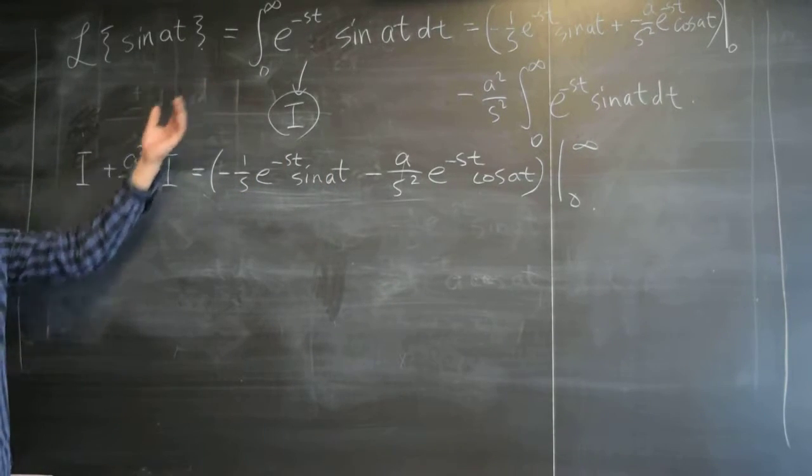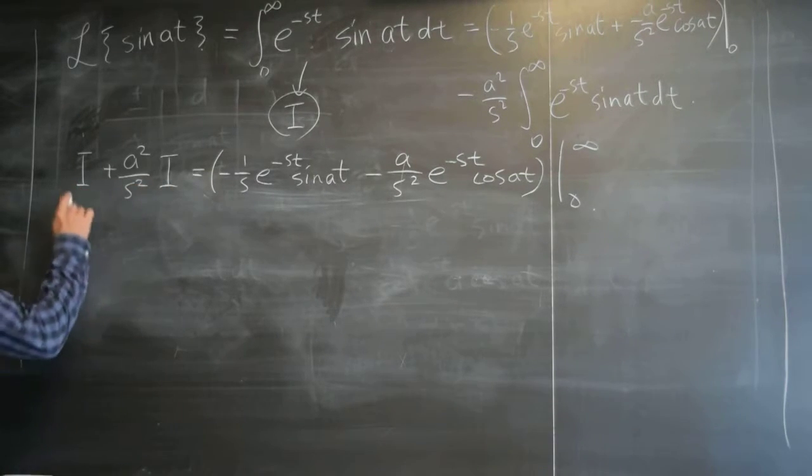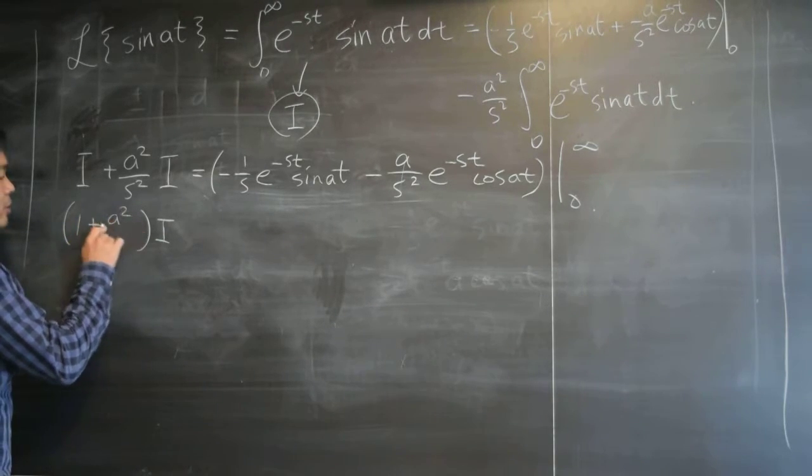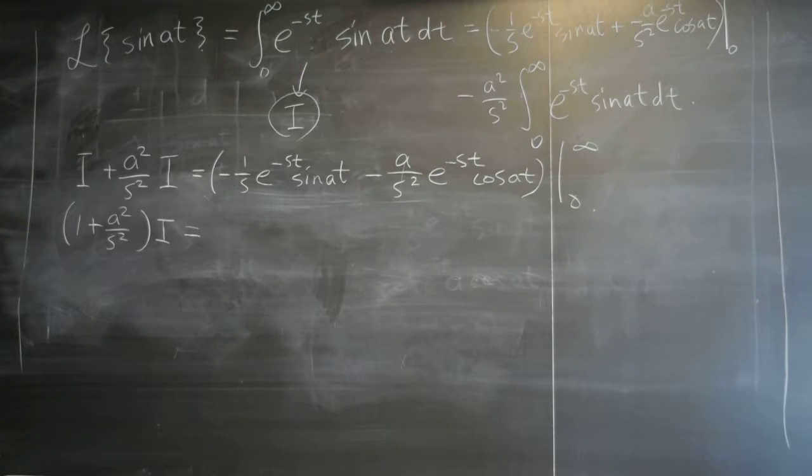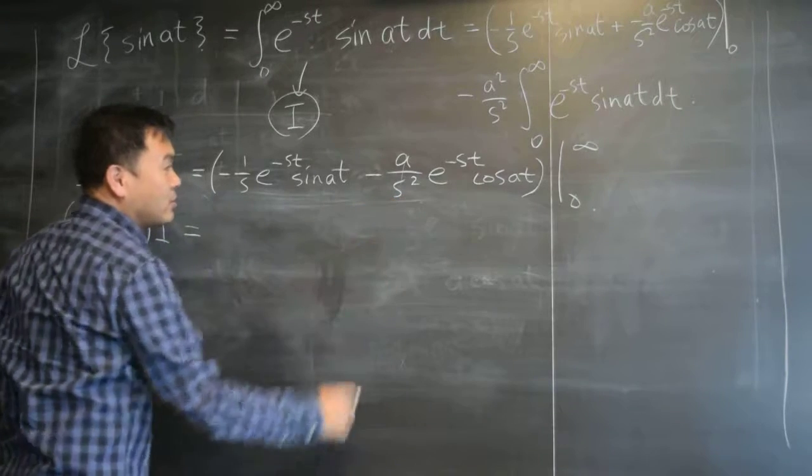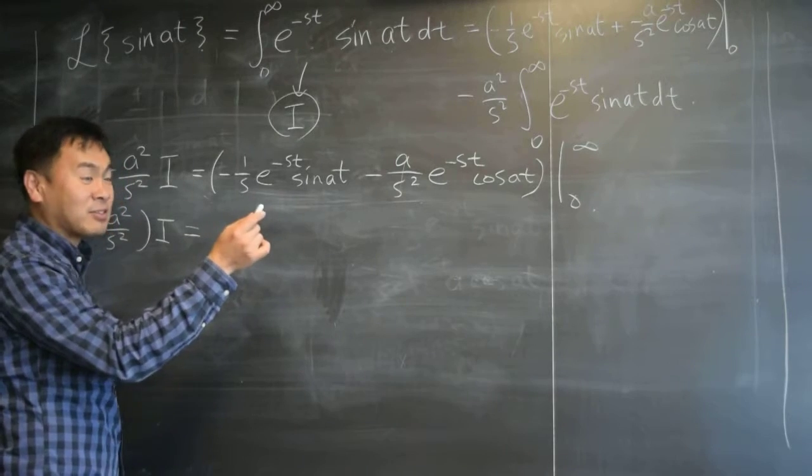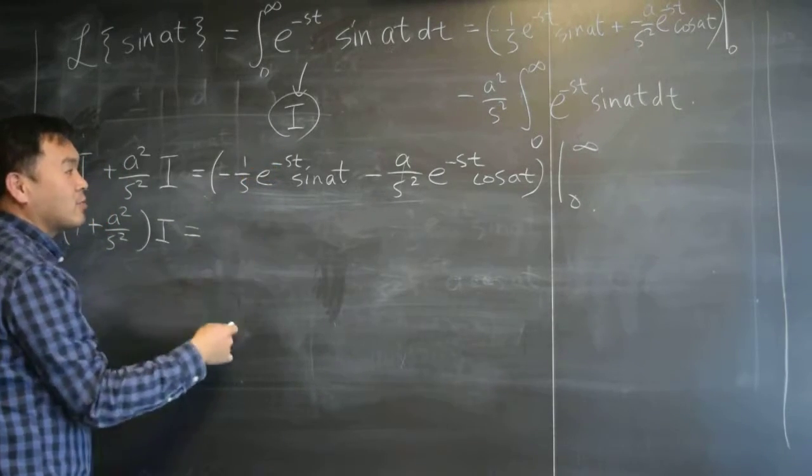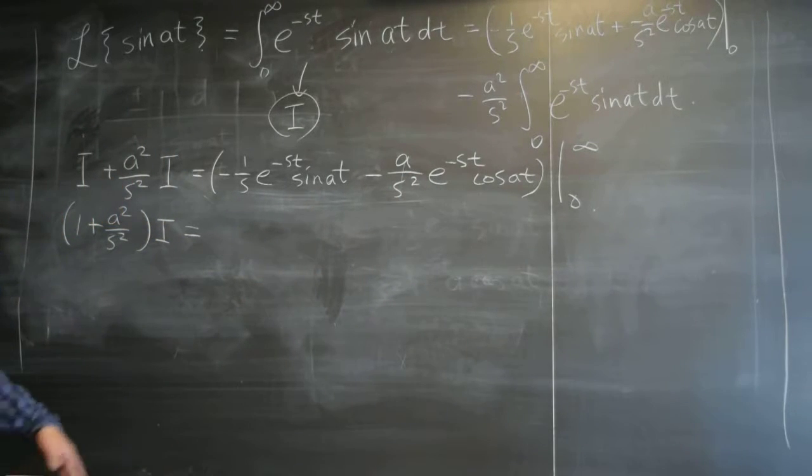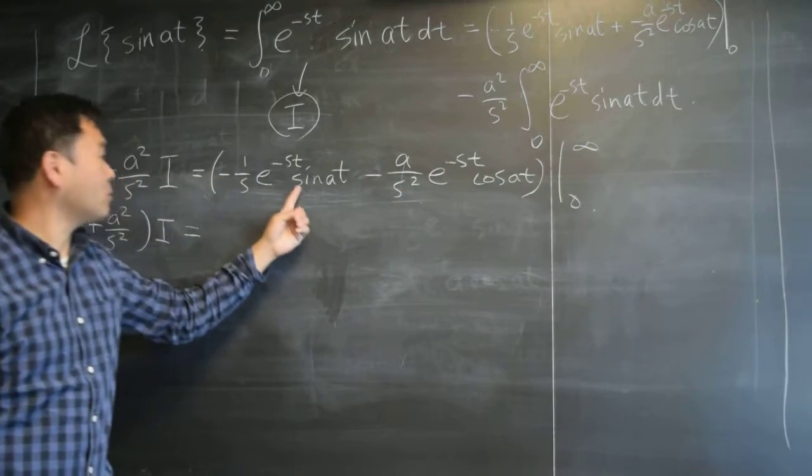Okay, so if you treat this as an equation, now you have something to solve for. See, this one, you can factor the i out and that gives you 1 plus a squared over s squared. Where on the right side, let's see. If you plug in infinity, what do you get for these?